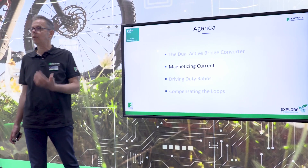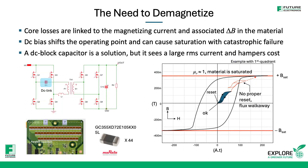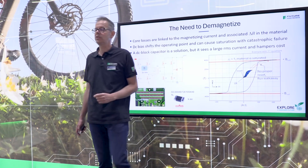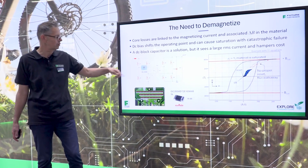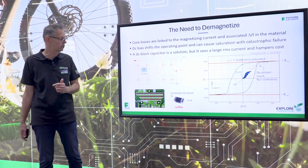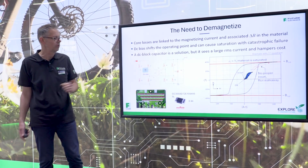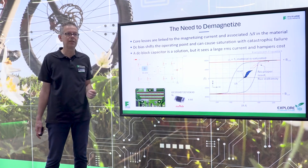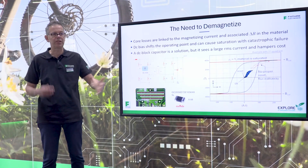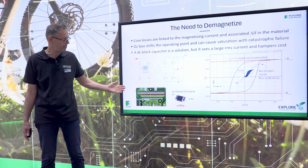Any time you deal with a power transformer, you need to check the magnetizing current, because it is the one which will incur core losses, and it has to remain in control at all times to avoid what we call flux walk away, which will ultimately provoke transformer saturation — a catastrophic failure. What people do generally is insert a DC block capacitor, which ensures that any offset in the full bridge structure controlling the transformer does not create a DC offset leading to catastrophic failure. This DC block capacitor sees the primary side current, which can be quite high, making it a bulky and costly capacitor. People assemble these capacitors in parallel, and you have to make sure the PCB layout is well done for proper current sharing, which can have a major impact on the bill of materials.